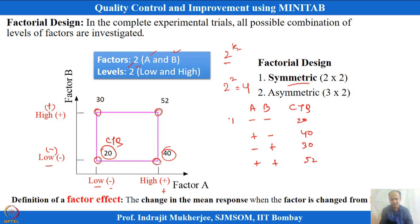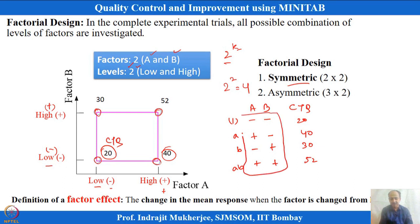Symbolically, the treatment combinations are noted as: 1 (both low), A (A high, B low), B (A low, B high), and AB (both high). This is the complete design matrix we are using with 4 trials.